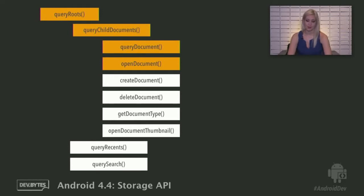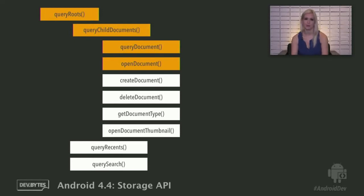Those first four methods are enough to get your content provider up and running, but there are a lot more methods you can override — recent documents, search, adding thumbnails to your images. Your implementation of these may vary significantly depending on what kind of backend you're running. I'm not going to go over them all here, but there's a sample implementation of each of these methods in the source code I'm posting.